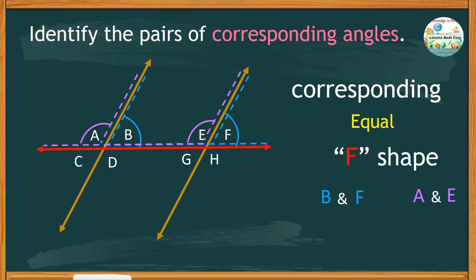Let's study the angles below the transversal. Locate the F shape right there. So, these two angles are equal, angles D and H.